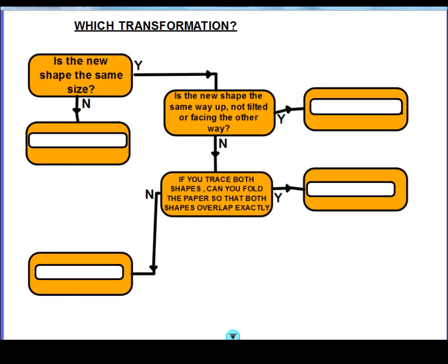One of the most difficult aspects students find is actually recognising which of the transformations it is. So what I've designed is a flowchart that you could use to try and work out which of the four transformations you're looking at. I've left the actual transformations blank at the moment and I thought it would be good for you to really think through what you think the missing transformation is in each case. I'll show you the answers in a moment.